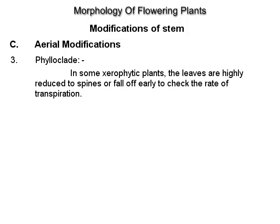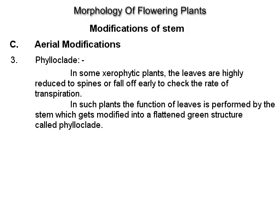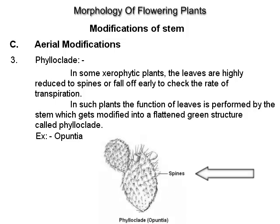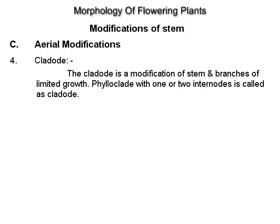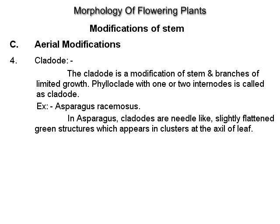Phyloclade: in some xerophytic plants, the leaves are highly reduced to spines or fall off early to check the rate of transpiration. The function of leaves is performed by the stem, which gets modified into a flattened green structure called a phyloclade, example Opuntia. Cladode: a modification of stem and branches of limited growth. Phyloclade with one or two internodes is called a cladode, example Asparagus racemosus, where cladodes are needle-like, slightly flattened green structures appearing in clusters at the axil of the leaf.